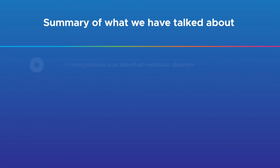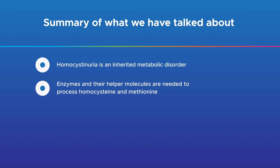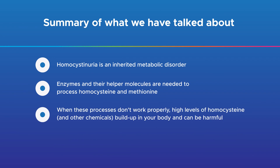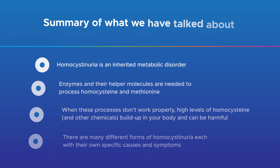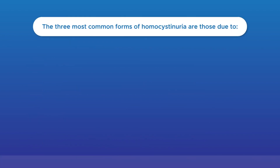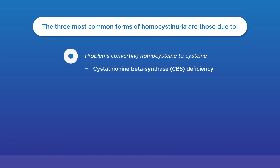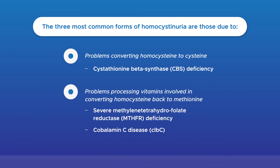To summarise: homocystinuria is an inherited metabolic disorder. Enzymes and their helper molecules are needed to process homocysteine and methionine. When these processes don't work properly, high levels of homocysteine and other chemicals build up and can be harmful. The three most common forms are: CBS deficiency, involving problems converting homocysteine to cysteine; MTHFR deficiency, involving folate metabolism; and cobalamin C disease, involving vitamin B12 metabolism.